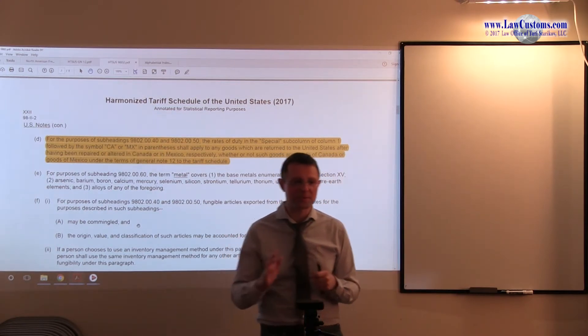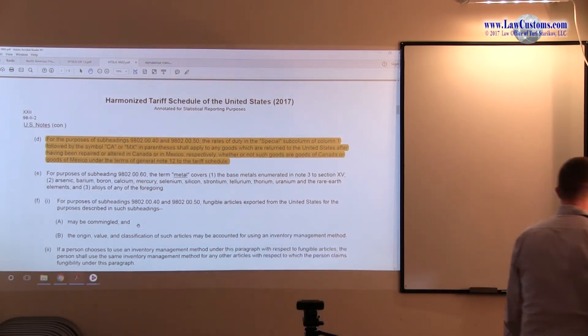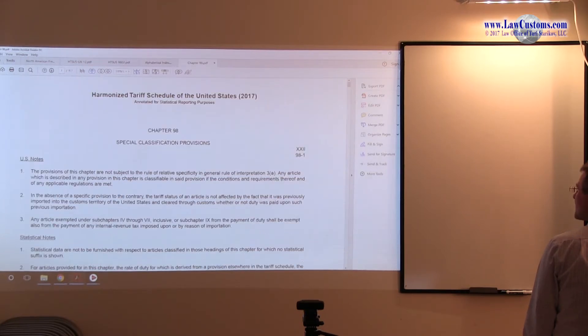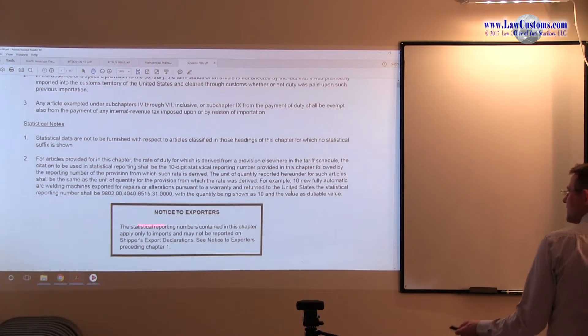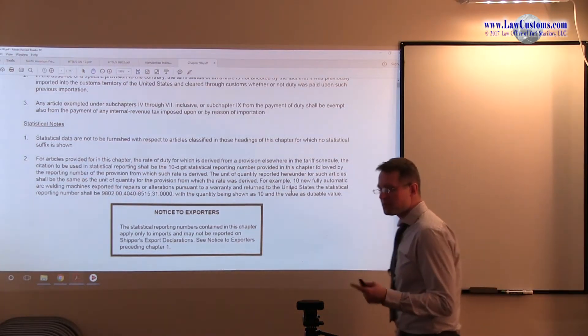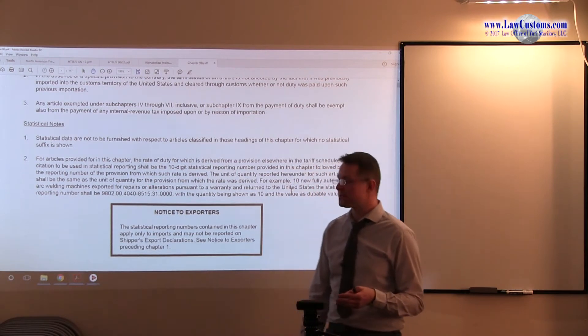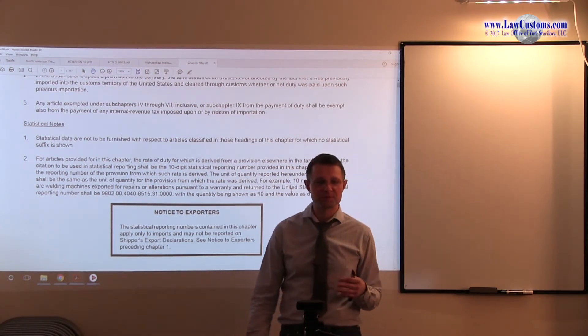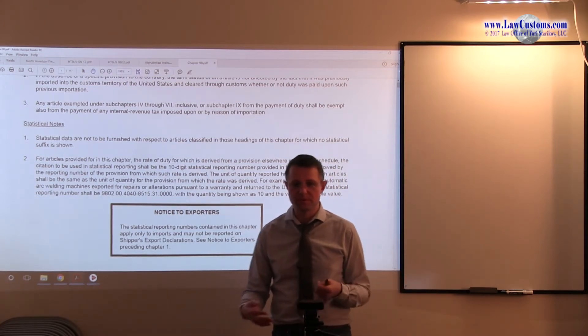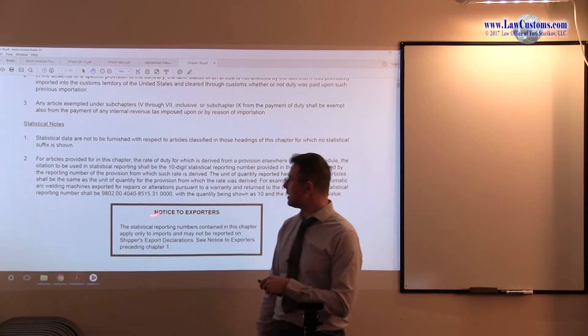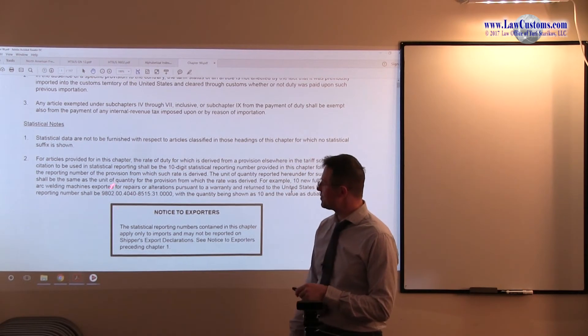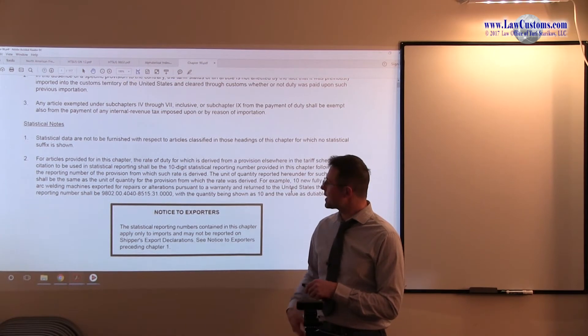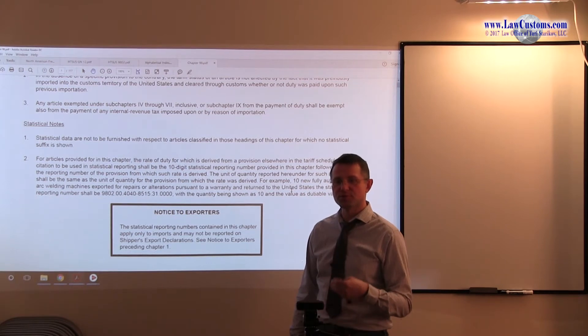So CA or MX symbols are applicable. The caveat here, of course, is that if we go to chapter 98, to the very beginning, we will see that, of course, these provisions, including the provisions that we just talked about, must be coupled with a real HTSUS number. And when you declare it on CBP Form 7501, either online or electronically or on paper, there is no way of avoiding the actual HTSUS number. So this one would be repair or alteration number, right?